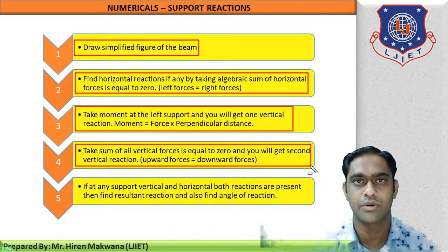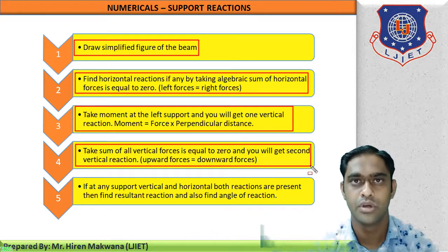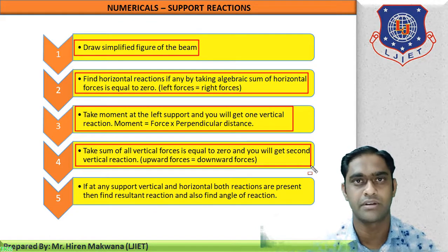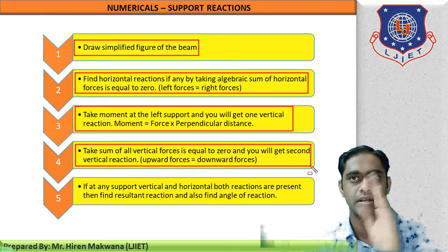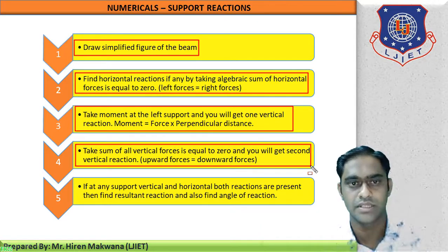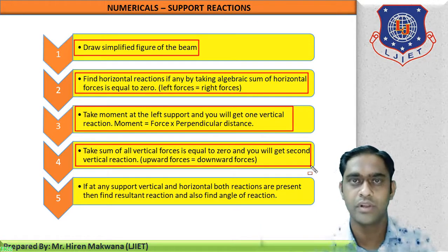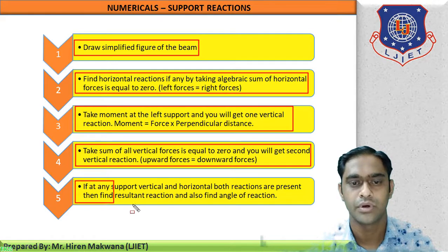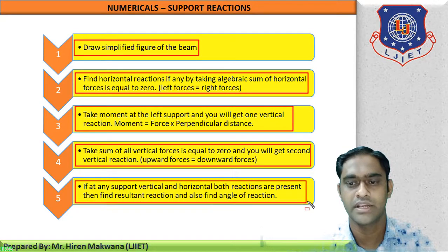In step number four, upward forces equal downward forces. You have to take all the vertical forces present in the figure and equate their algebraic sum to zero — meaning upward forces equal downward forces. Then you will find the second unknown vertical reaction.